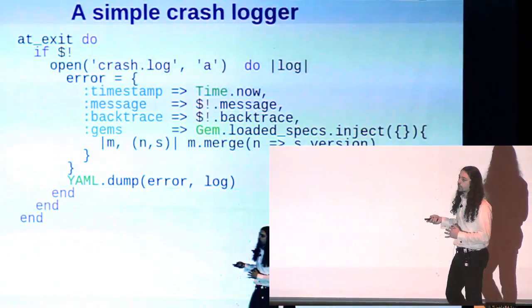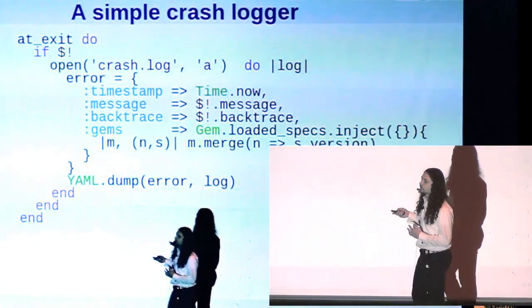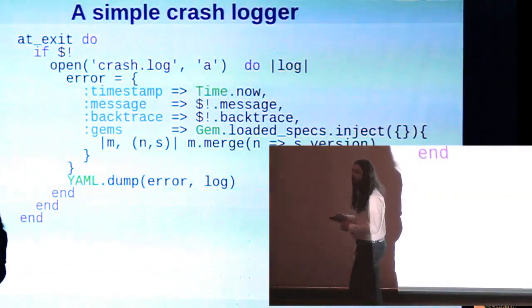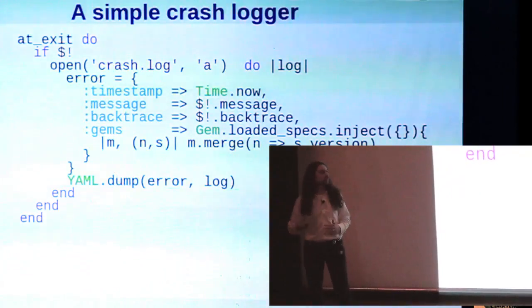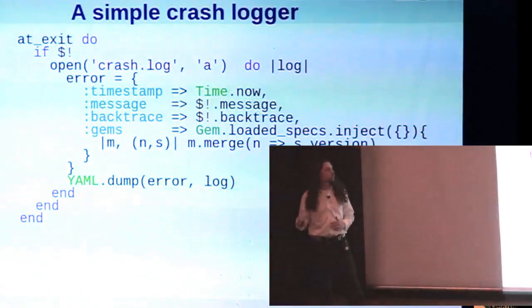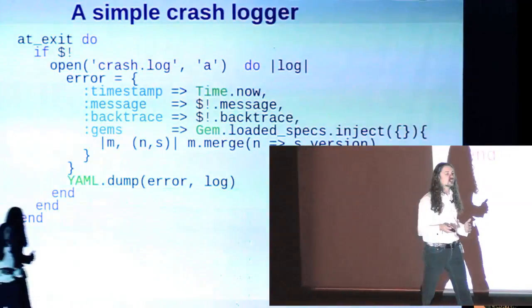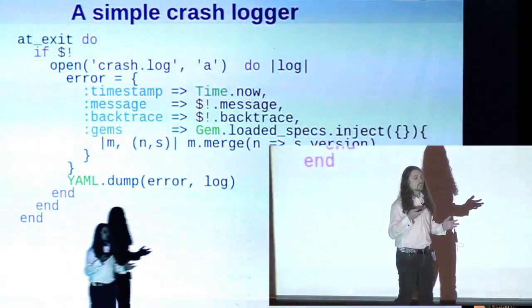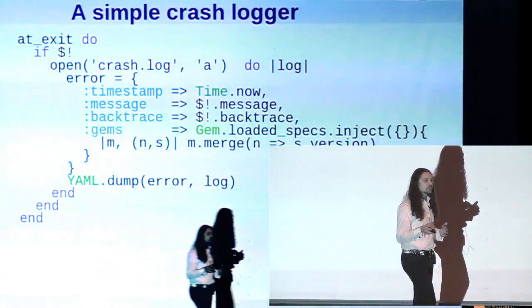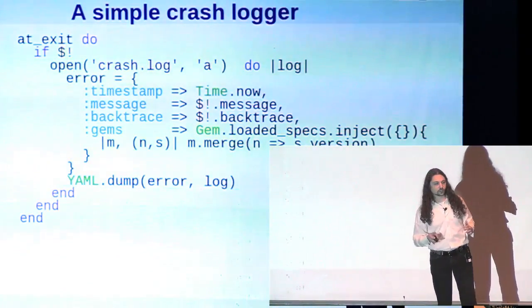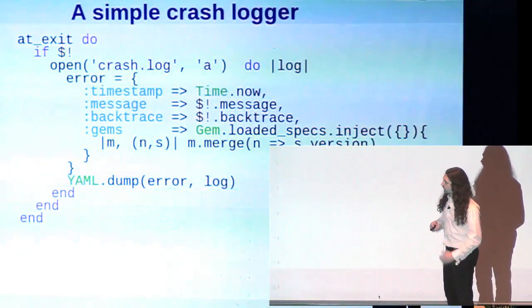Well, you can if you use an at_exit block. At_exit is normally executed when the program ends. But how do we know if the program is ending normally or if it's ending because of an unhandled exception? Well, that's where this dollar bang, this error info variable comes in. We can check that and say this is ending because an exception was raised, so we're going to log some information about it. In this case, we're logging the time, logging some stuff from the exception itself. We're also logging the version of all the gems that were loaded at the time of the failure.